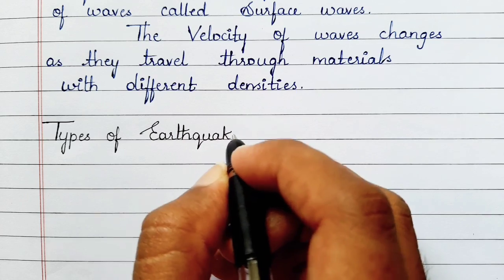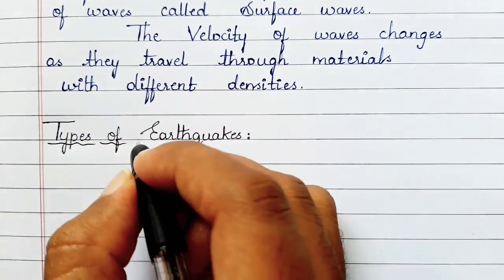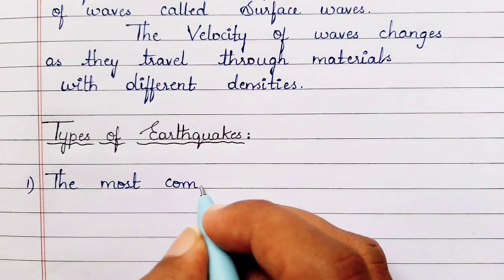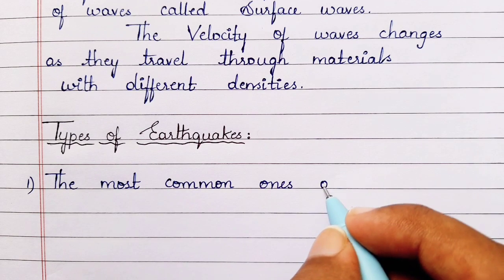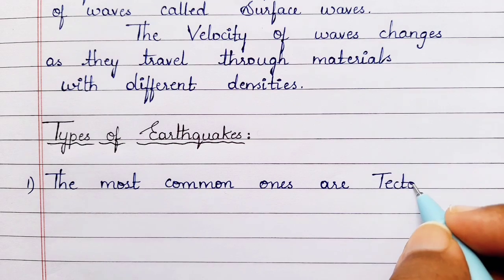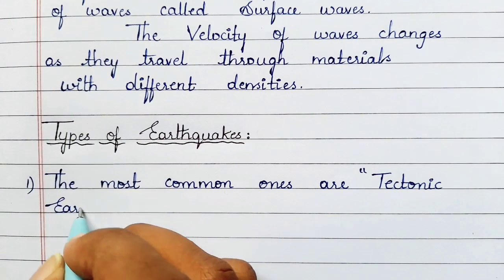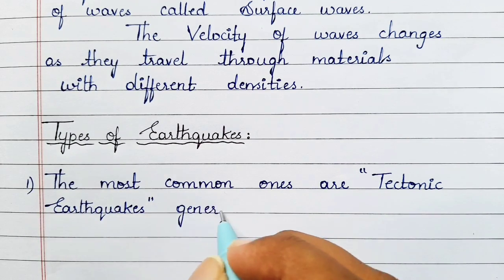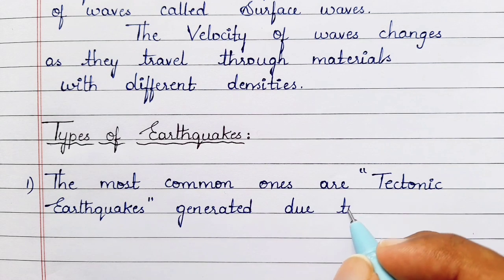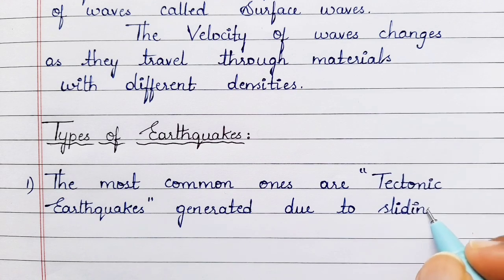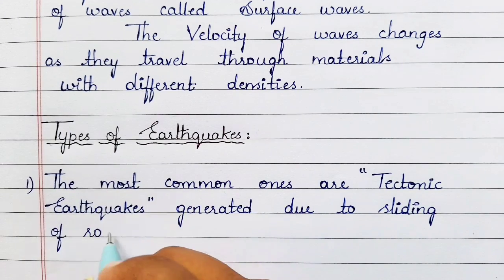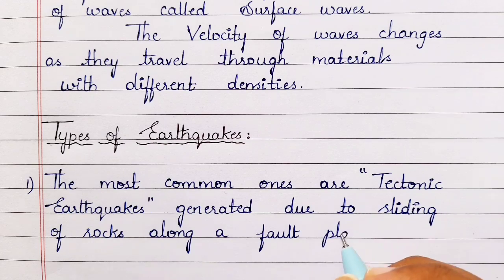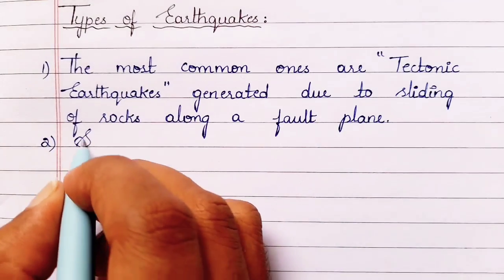Next, coming to the types of earthquakes. Although it is a natural hazard, its occurrence is of different types and it is categorized into several types. The most common earthquakes are tectonic earthquakes — they are generated due to the sliding of rocks along a fault plane.